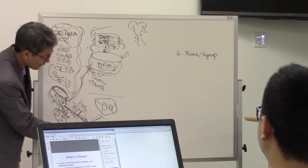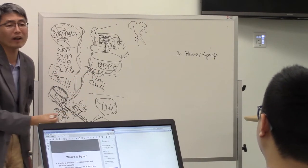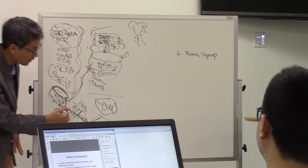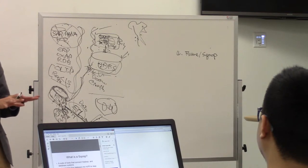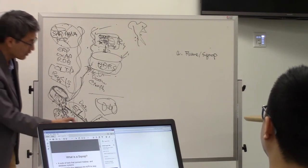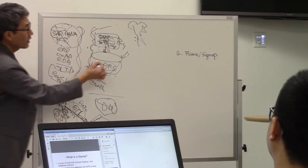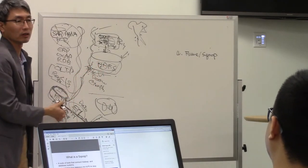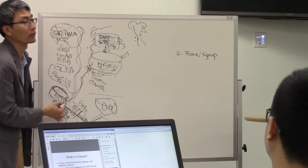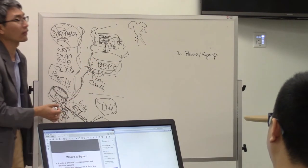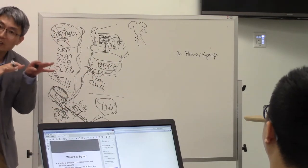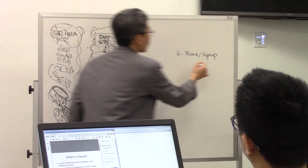However, the data structures between legacy systems are quite similar — both use relational database and file systems. But the big data system is totally different in data structure and file system. So we need a different ETL tool in the Hadoop ecosystem. That is Sqoop and Flume.